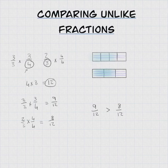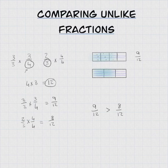Now I've got both fractions broken up into 12 pieces. In my first example I have 9 out of 12 — that's 9 twelfths. And in my second example I've got 8 out of 12 — that's 8 twelfths.